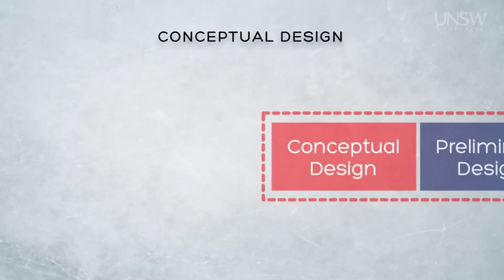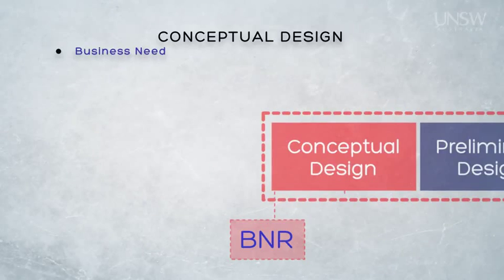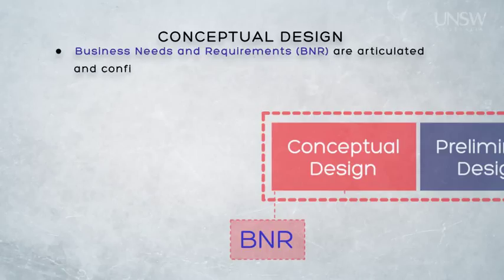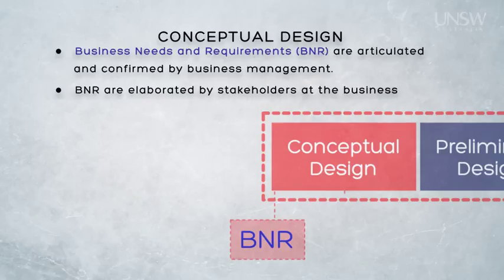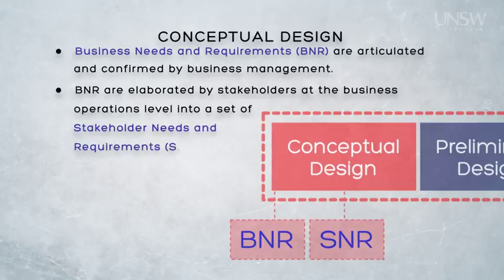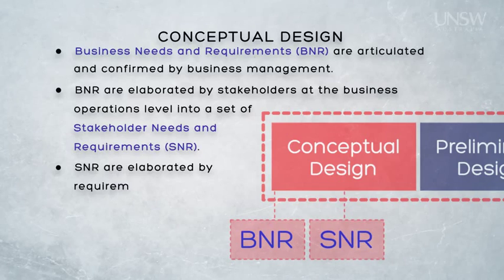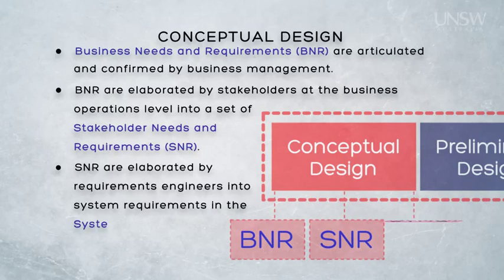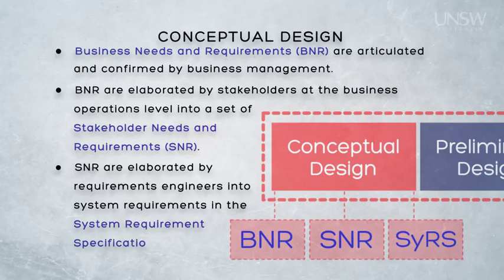This transition has three broad steps from the mission statement through to a set of system requirements. First, we develop business needs and requirements, which are articulated and confirmed by business management, and then elaborated by stakeholders at the business operations level into a set of stakeholder needs and requirements, or SNR. These are then elaborated further by requirements engineers into a set of system requirements, commonly called the system requirements specification, or the SYRS.